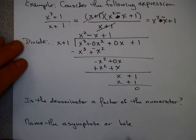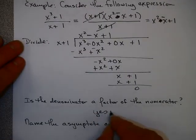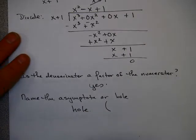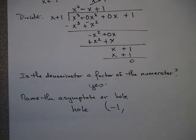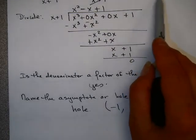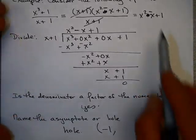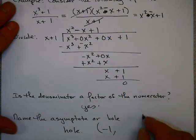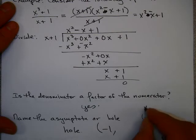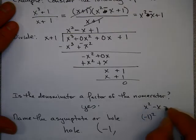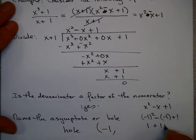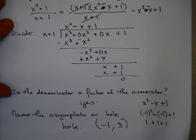Is the denominator a factor of the numerator? Yes. Is there an asymptote or hole? There is a hole, and the hole happens at negative 1. And if I were to plug negative 1 into this quotient right here, that would give me the value that the hole would have to be. So if I plug negative 1 into x squared minus x plus 1, that's going to give you 1 plus 1 plus 1, or 3. That would be where my hole would be.